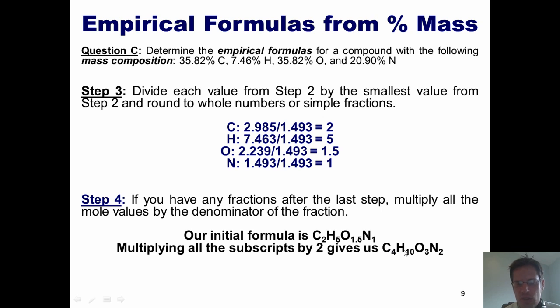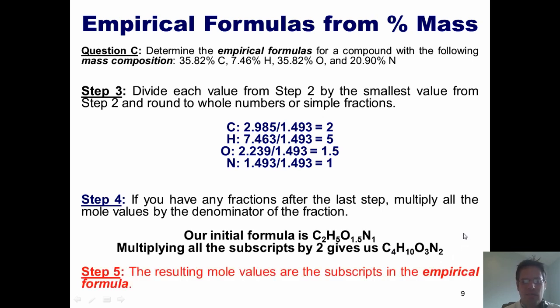We multiply every one of these subscripts by two. The final empirical formula is C4H10O3N2. Step five is you're done. Any questions? Good. I'll let you tackle the problem sets I'll give you on your own.